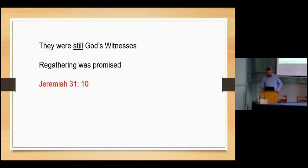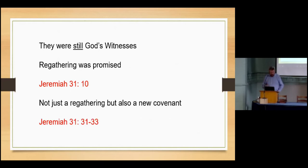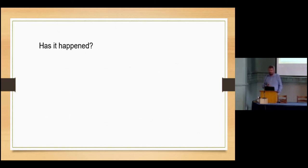So a regathering to their own land was promised, and not just a regathering but also a new covenant. It's in Jeremiah 31, this time verse 31. Behold, the days are coming, declares the Lord, when I will make a new covenant with the house of Israel and the house of Judah, not like the covenant that I made with their fathers on the day when I took them by the hand to bring them out of the land of Egypt, my covenant that they broke, though I was their husband, declares the Lord. For this is the covenant that I will make with the house of Israel after those days, declares the Lord: I will put my law within them, I will write it on their hearts, and I will be their God and they shall be my people. So a wonderful regathering, a wonderful new agreement, a new covenant with the people was promised.